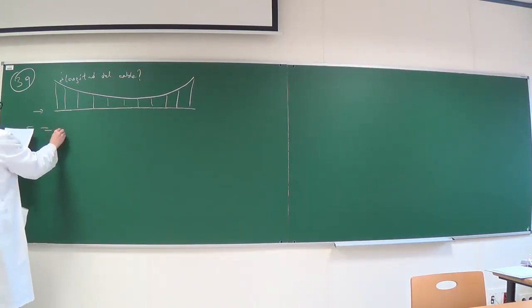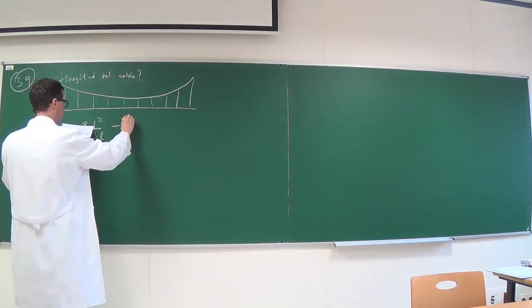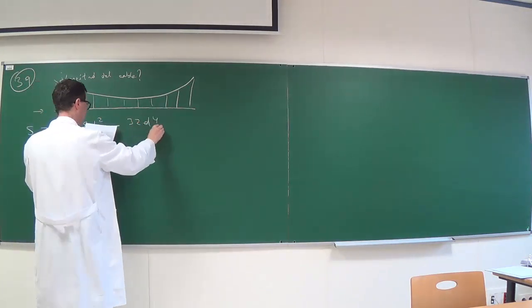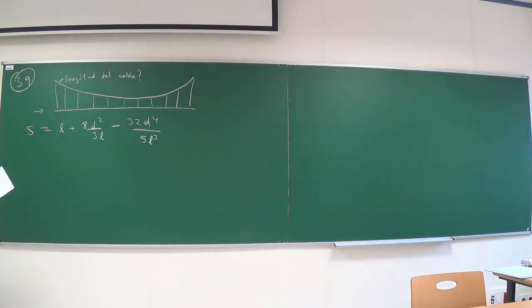We have to find this length as a Taylor series. S is equal to L plus 8D² divided by 3L minus 32D⁴ divided by 5L³. And this problem is from the book of Schill, if I'm not mistaken.